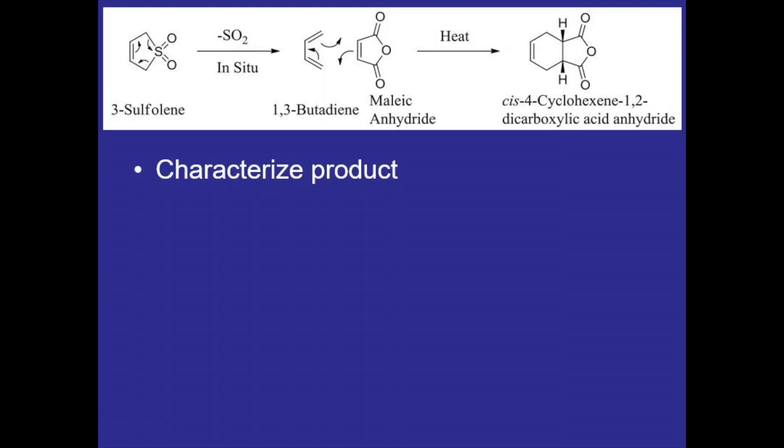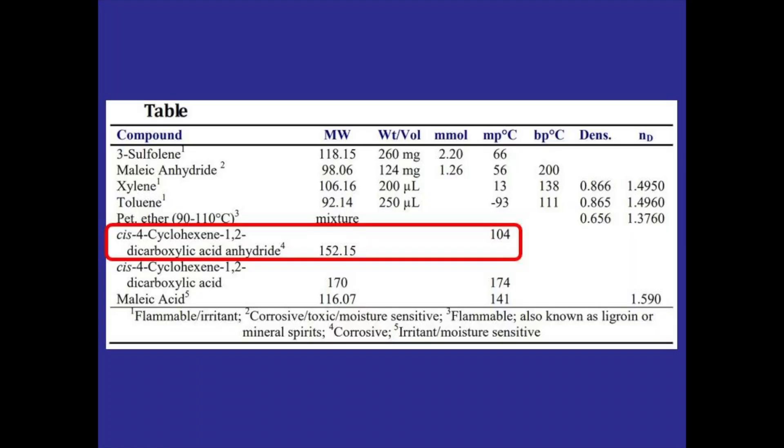Once we have the purified crystals we can characterize the product by taking a melting point and running an IR spec. Now just briefly I want to go over some concepts around melting points. For example, let's say we're taking the melting point for the anhydride product which we would expect to see around 104 degrees Celsius, but let's say that we were not able to remove all of the dicarboxylic acid which has a melting point of 174 degrees.